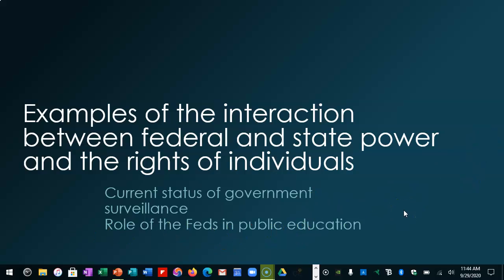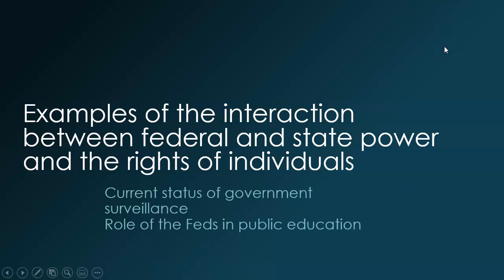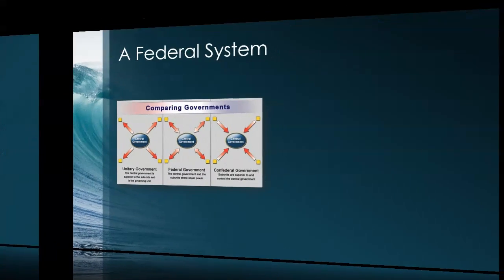The confusing part is there are actually areas where powers overlap — things that both can do. Public education, for example: the state tells us what we're supposed to learn, and the federal government provides some of the funds. Taxation — if you have a job, you're taxed by the state government, possibly a local government if you work in a city, and definitely the federal government. So there are things they all can do.